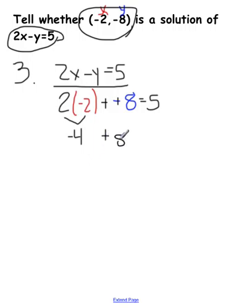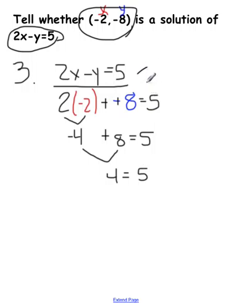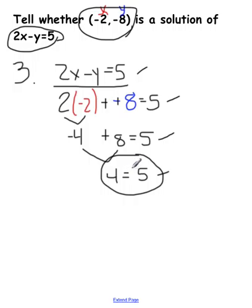Plus 8 equals 5. Do the addition: negative 4 and positive 8 is positive 4. Bring everything else down — there, 4 lines again: copy the equation, put in substitutions, use PEMDAS, finish the math. Is 4 equal to 5? No. 4 is not equal to 5, so put a slash through that — that's a no.